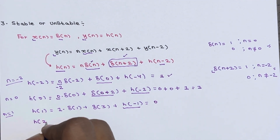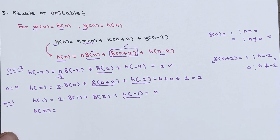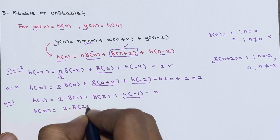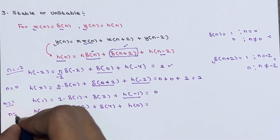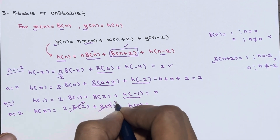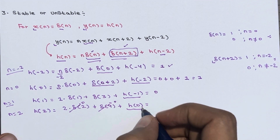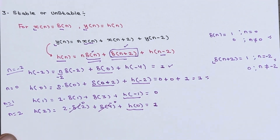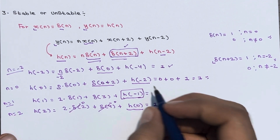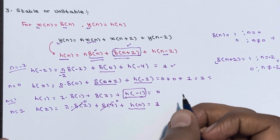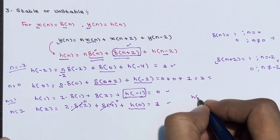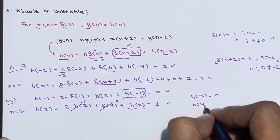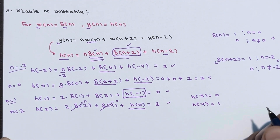For h(2): h(2) = 2·δ(2) + δ(4) + h(0). At n = 2, δ(2) = 0 and δ(4) = 0, so h(2) = h(0) = 1. For h(3) you will get 0, and for h(4) you will get 1. You can do this calculation and capture the pattern.